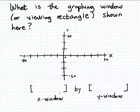A graphing window consists of two parts. The x-window, that's the portion of the x-axis that's included in your rectangular coordinate system, and then, of course, a y-window. That's the portion of the y-axis that's included in your rectangular coordinate system.